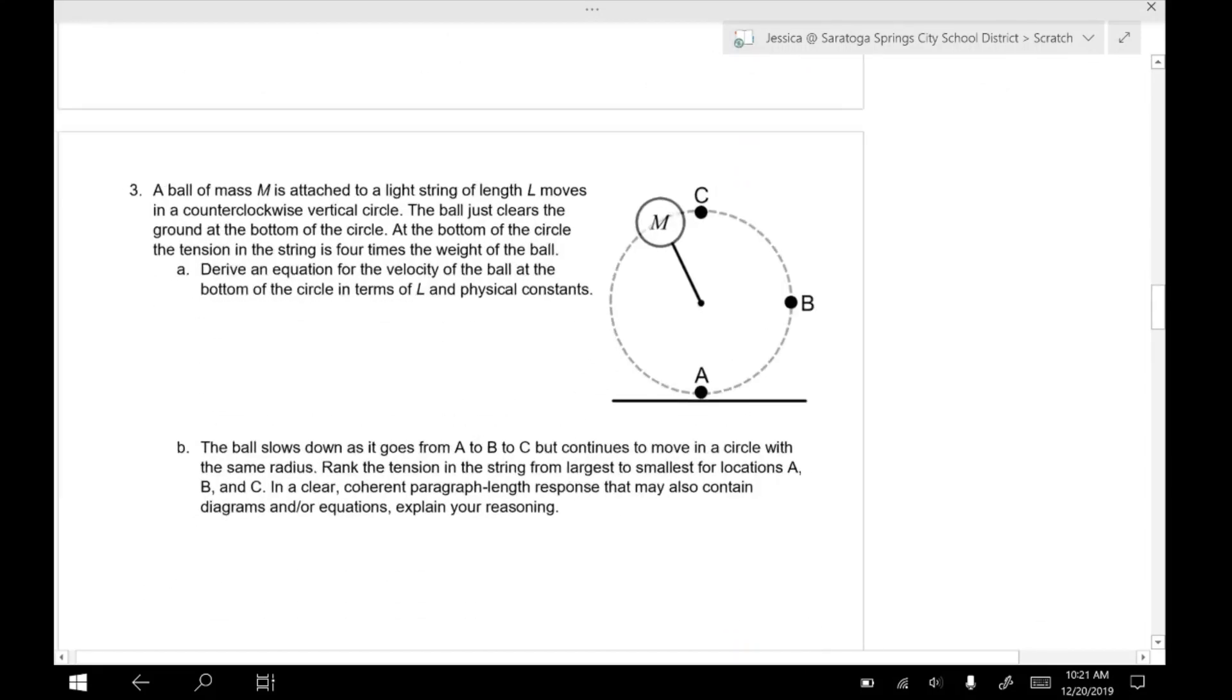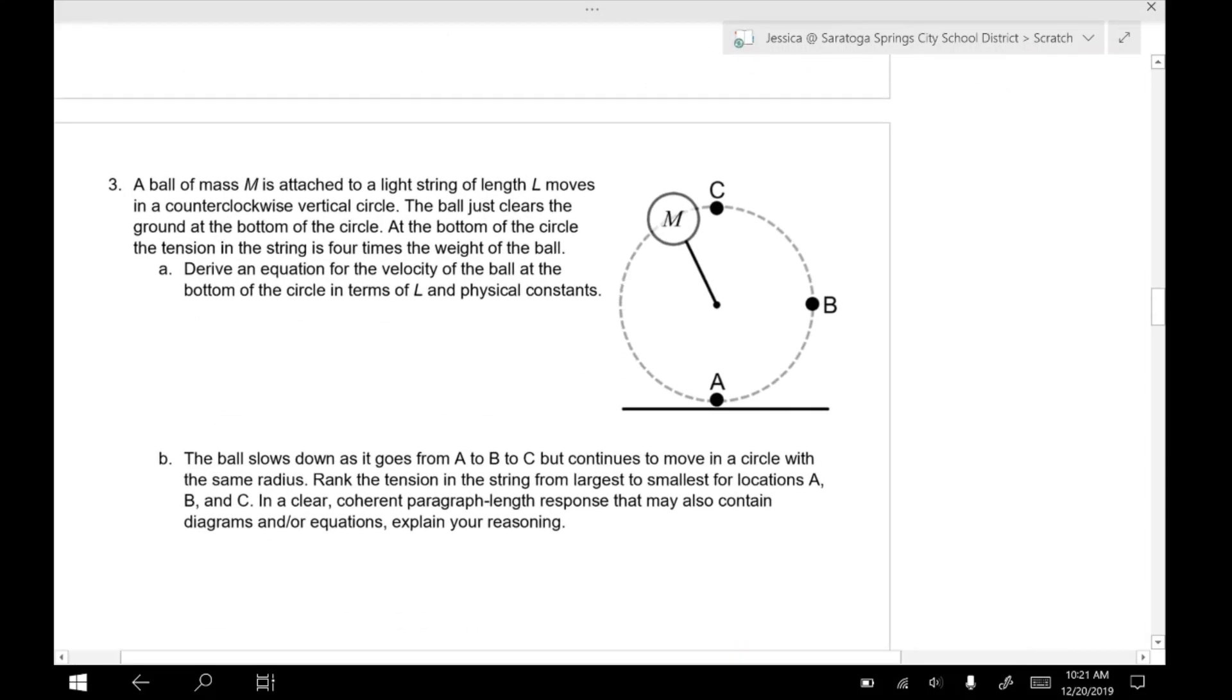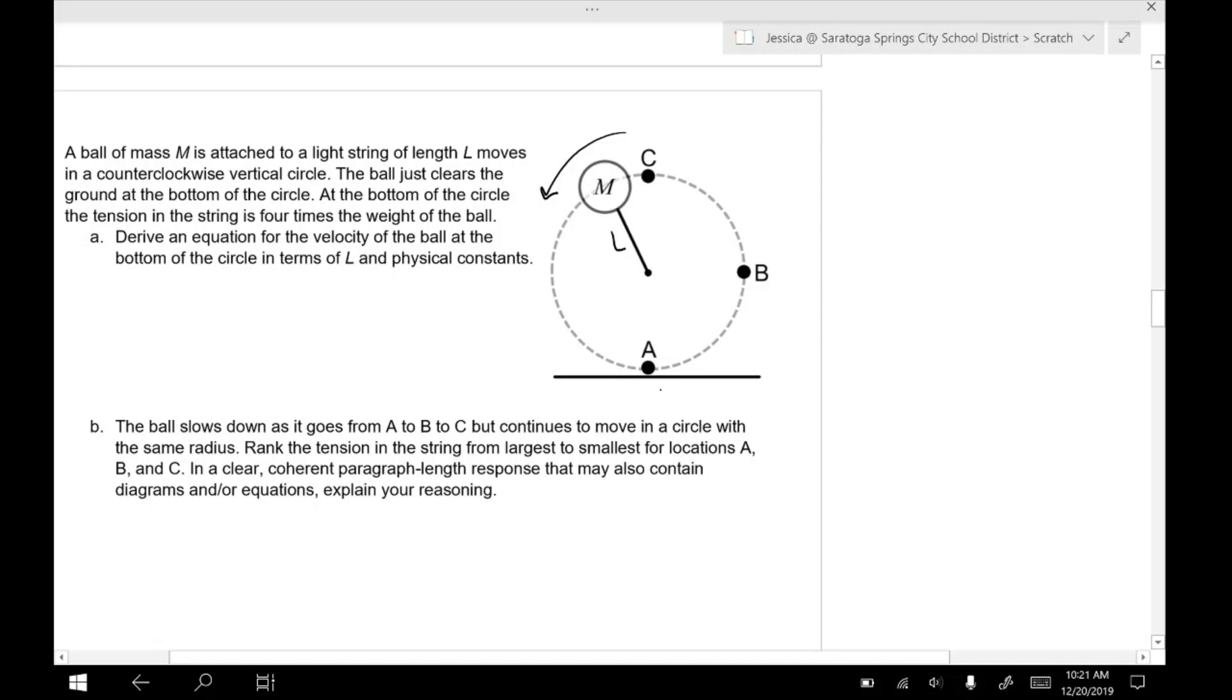All right, so now we have a ball that is swinging in a vertical circle. So it's attached to a string of length L. So that's our radius. If you ever have a string moving in a circle and the string is length L, that L represents your radius. Swinging counterclockwise in a vertical circle, so going like that. At the bottom of the circle, the tension in the string is four times the weight. So that means down here at A, the tension at A is 4mg.